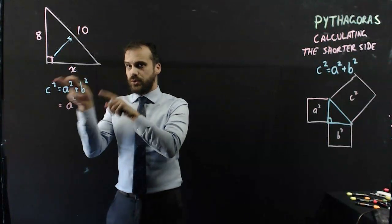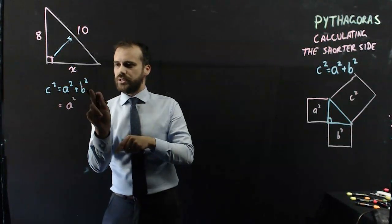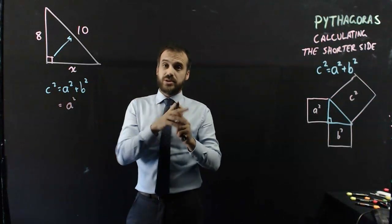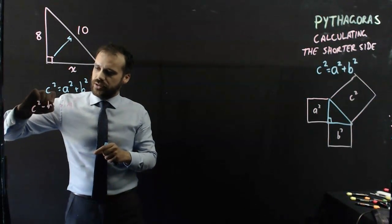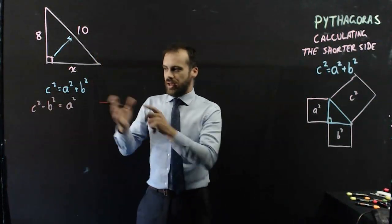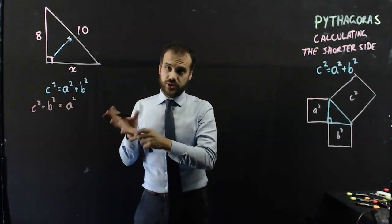Now if I subtract b squared from both sides, b squared minus b squared, it's gone. On this side I get c squared minus b squared. And that is our formula for finding the shorter side.